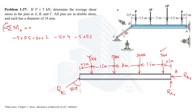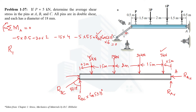Since RBC is not horizontal or vertical, it must be resolved into components. The horizontal component passes through A and produces no moment. The vertical component causes a clockwise (positive) moment of magnitude RBC × cos 53.13°, with a moment arm of 6. Setting the equation equal to zero and solving — the only unknown is RBC — we get RBC = 41.67 kN.